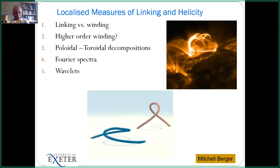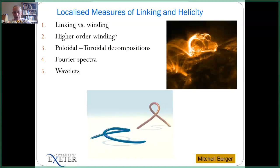Classically, topology discusses complete global objects. If you have circles or curves, they're supposed to be closed and then they link or they don't. Geometry might look more closely at different parts of the object. So what we're trying to do today is get some links between geometry and topology — how do you get to the topology knowing some aspects of the geometry?